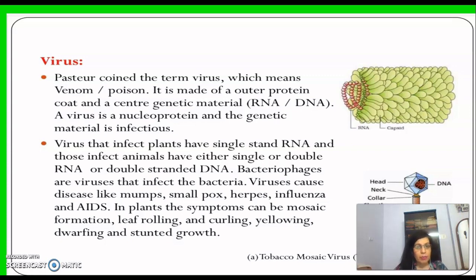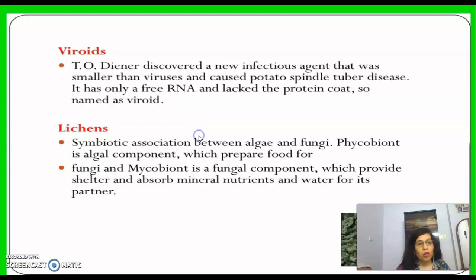The most important thing about a virus is that it is an acellular body — it has no cell body. It is infectious and takes up the machinery of the host cell. Outside the body it is non-living; inside the body it is living. Viroids were discovered as a new infectious agent smaller than viruses; they caused potato spindle tuber disease. Viroids have only a free RNA and lack the protein coat, hence the name viroid.